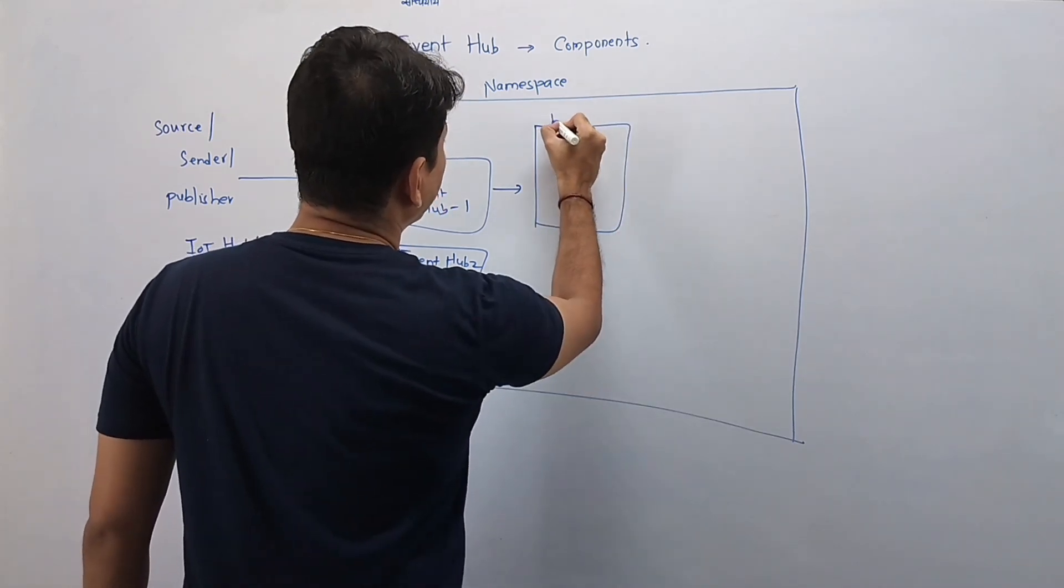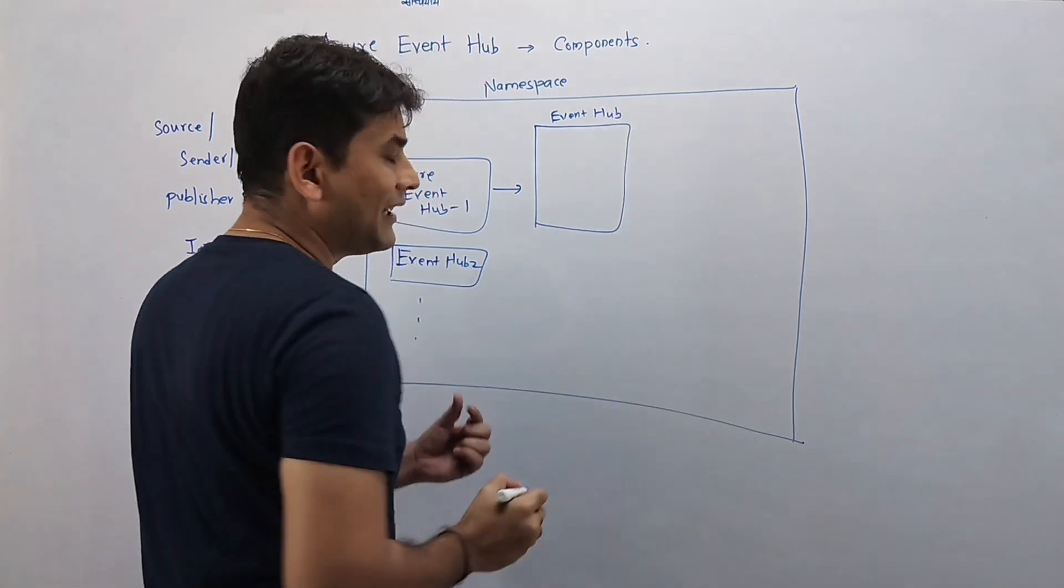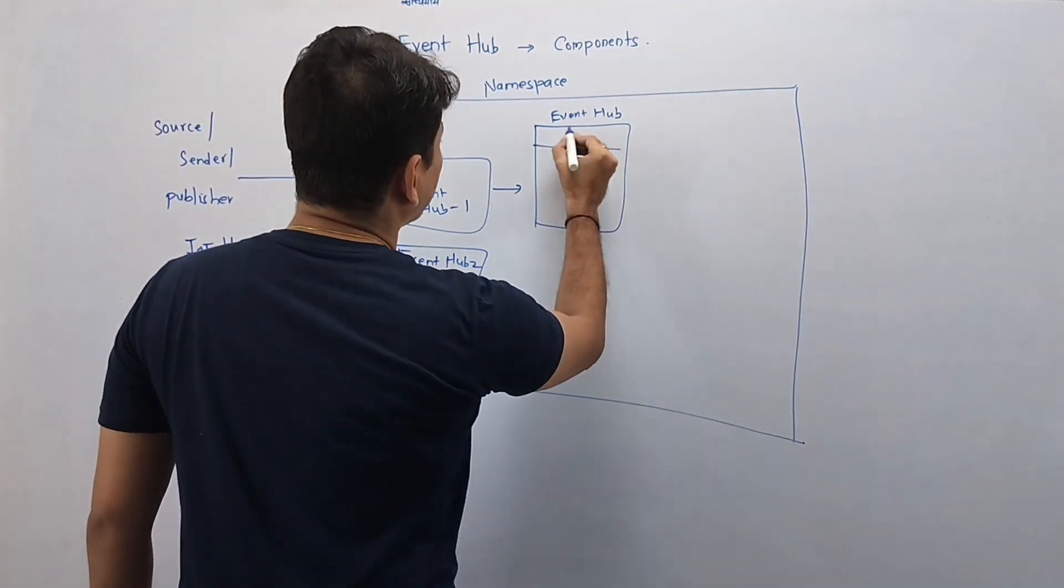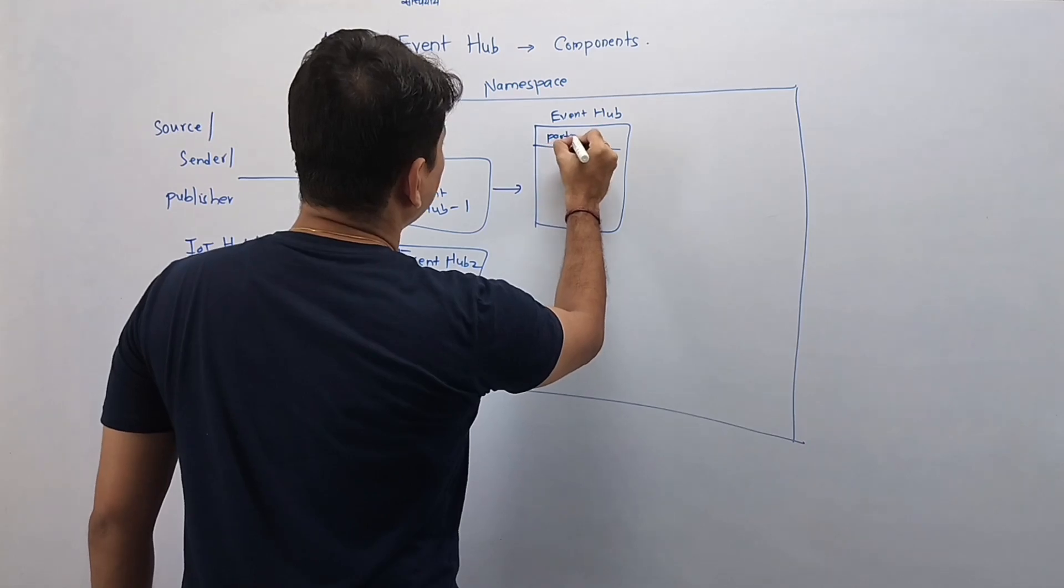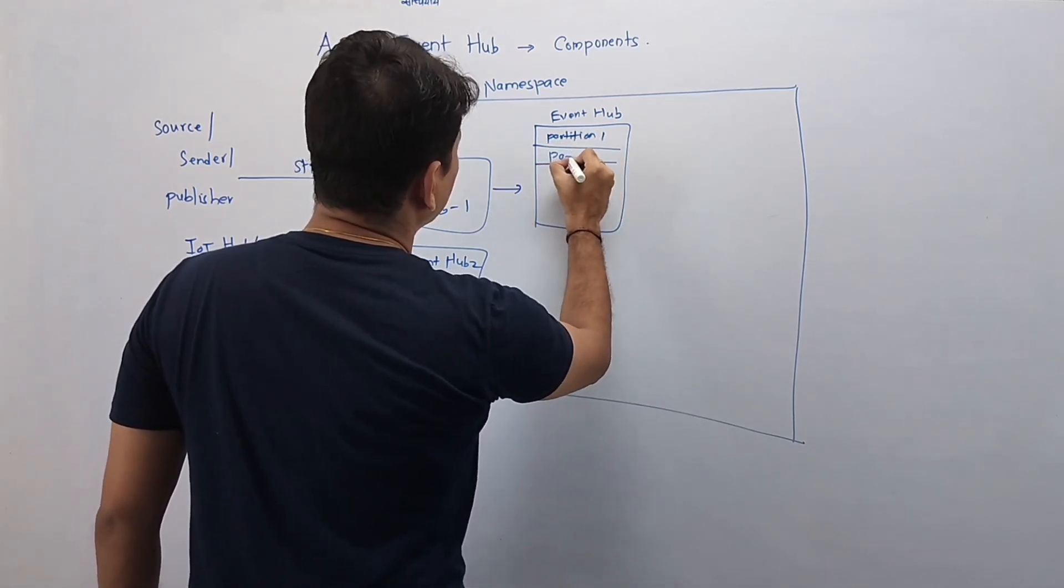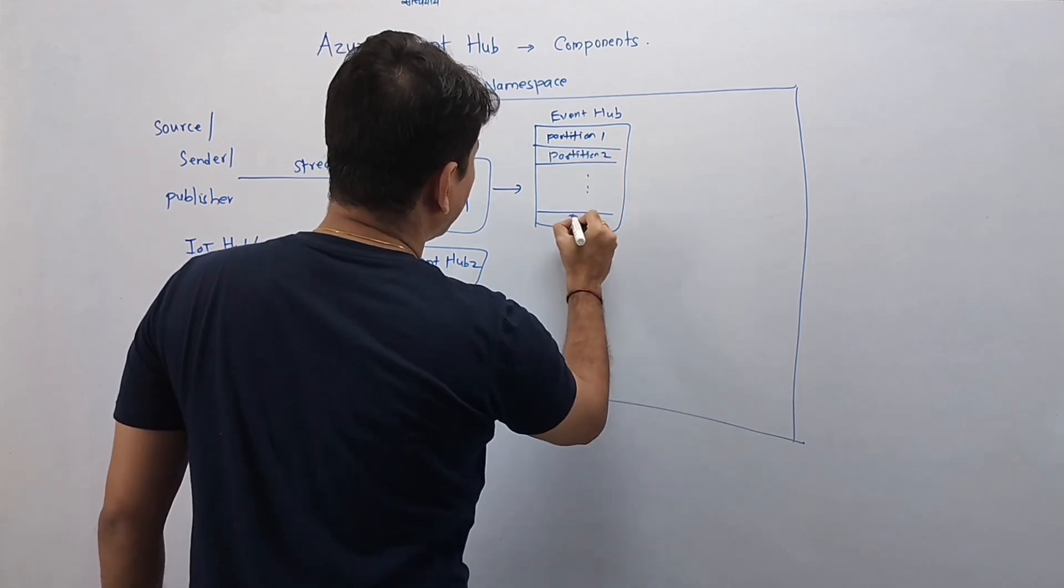So this is our Event Hub. And internally, it can contain 32 partitions. So this is partition 1, partition 2. Like that, it can have 32 partitions.